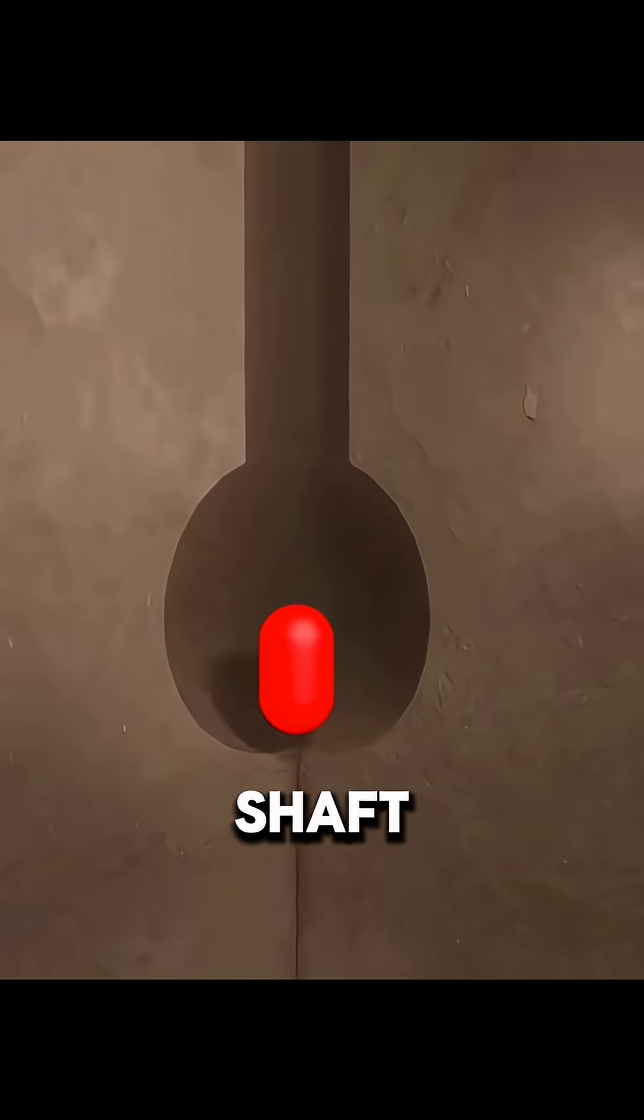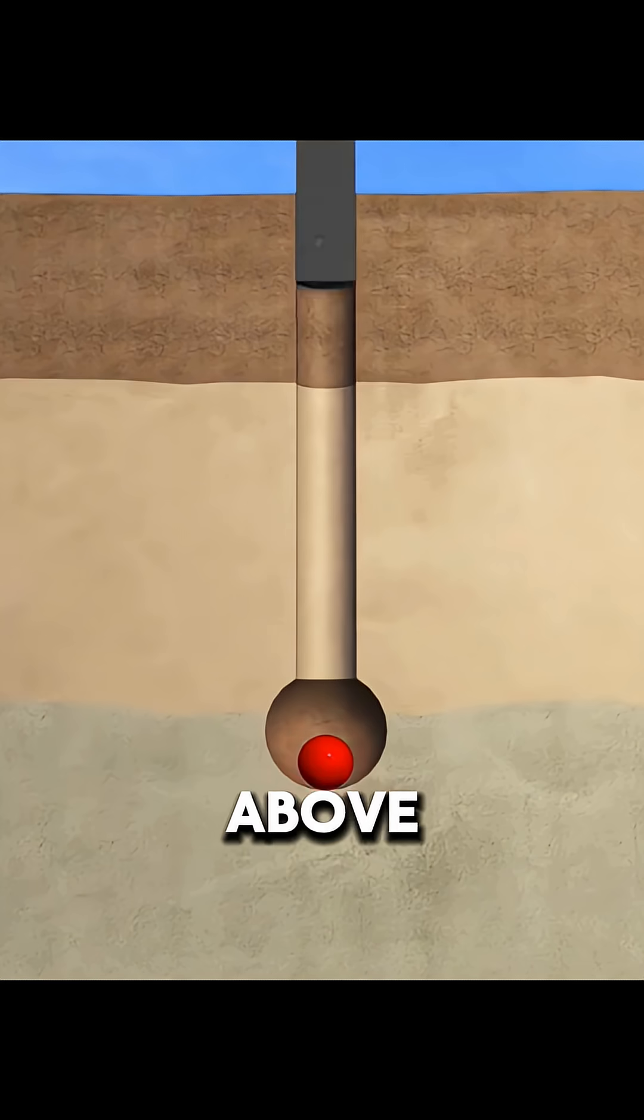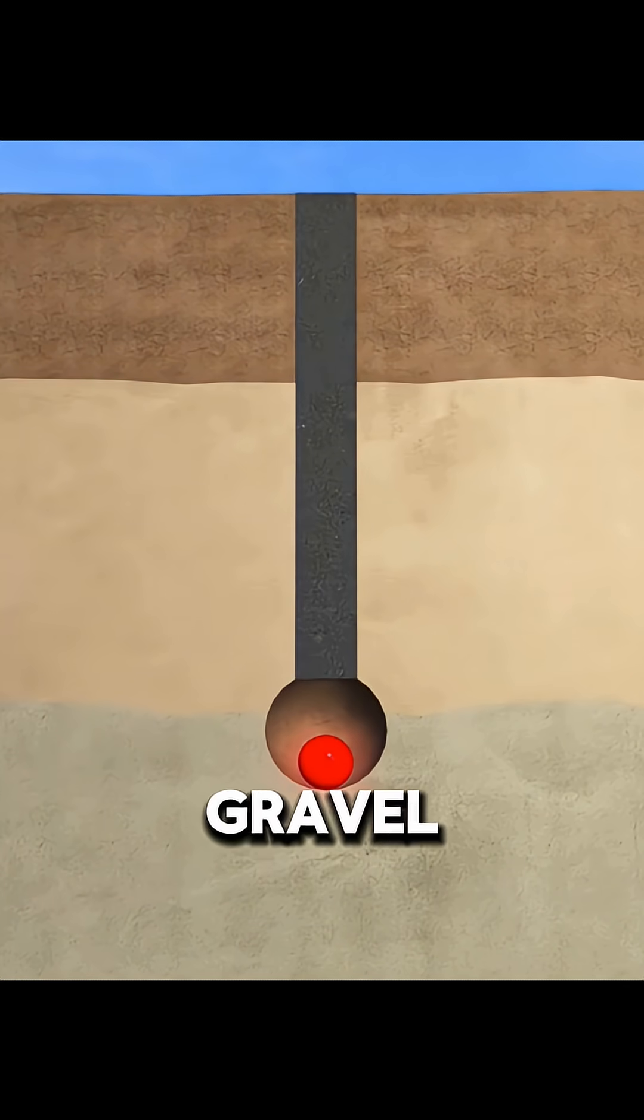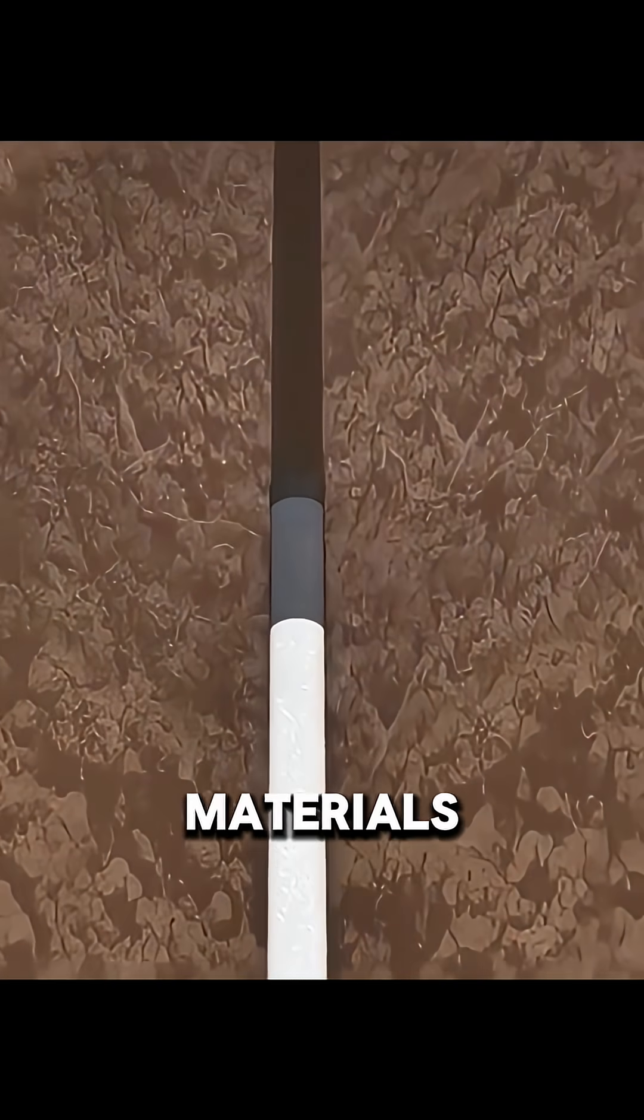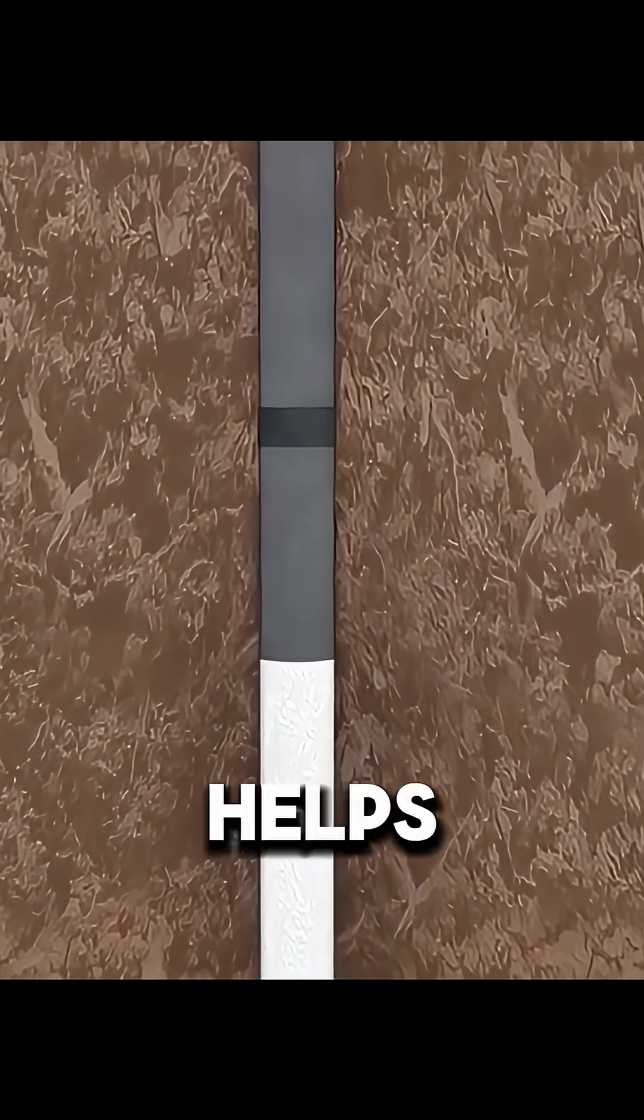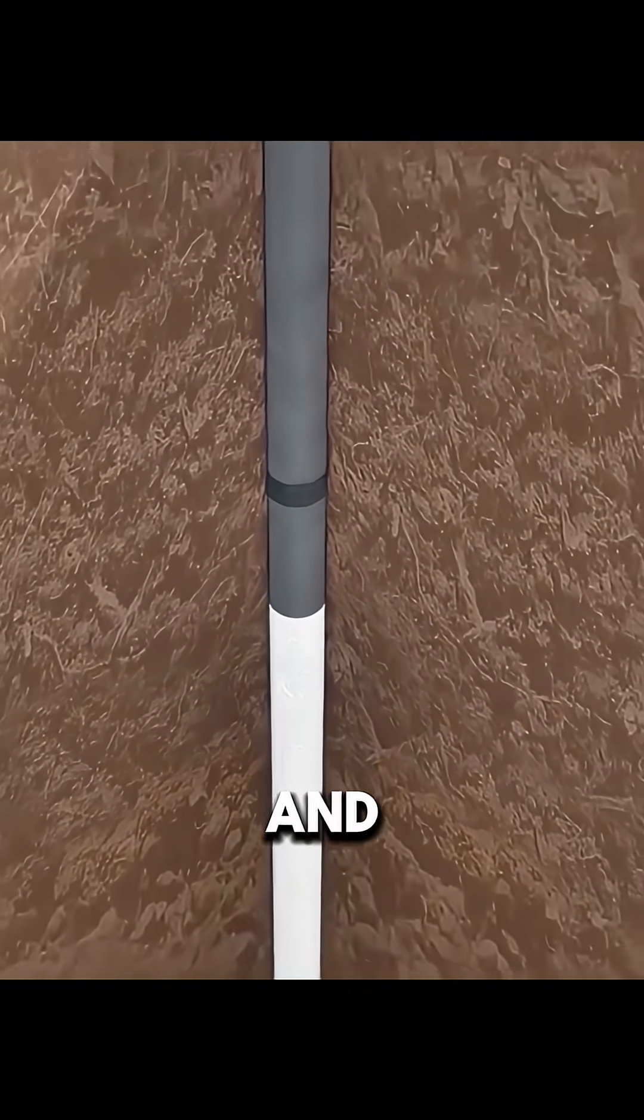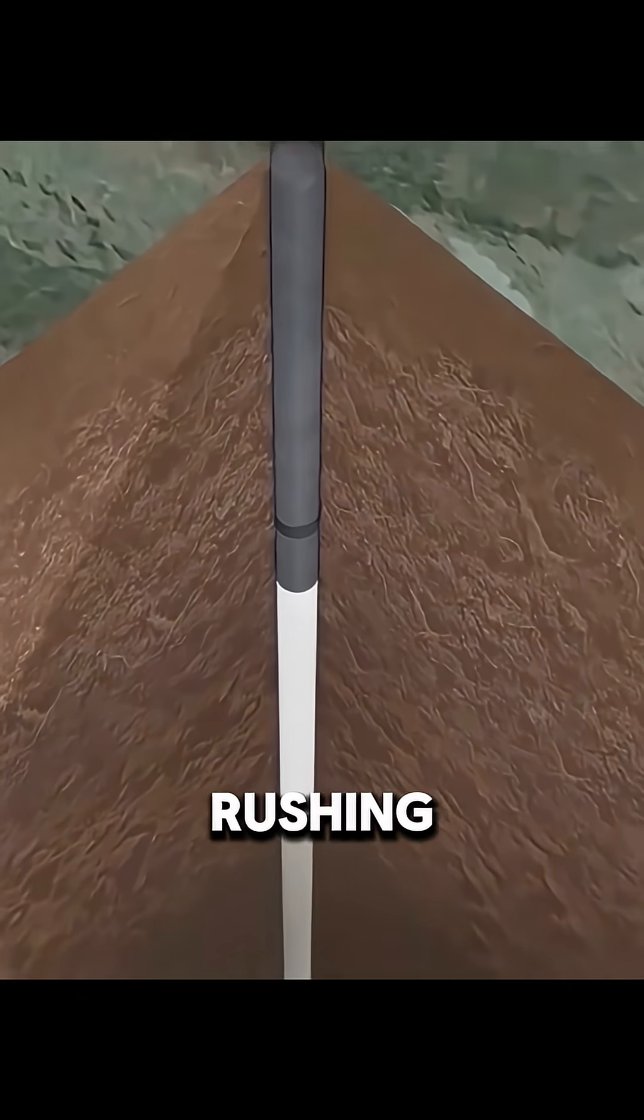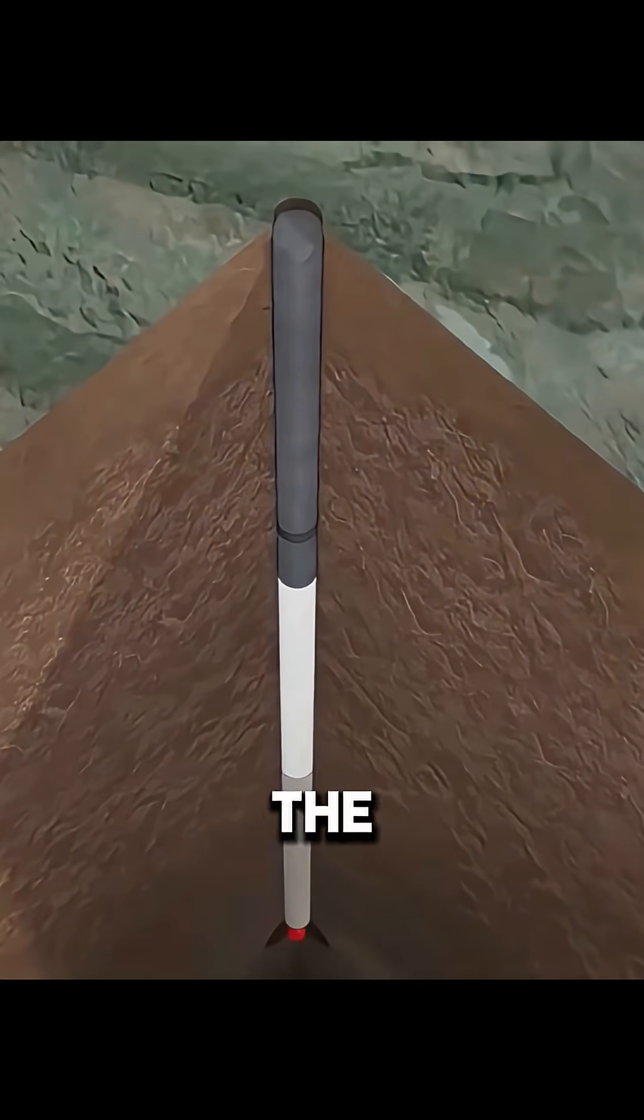Next, they seal the shaft. Workers backfill the space above the device with sand, gravel, concrete, and other materials, layer by layer. This helps stop high-pressure gas and radioactive material from rushing back up to the surface during the explosion.